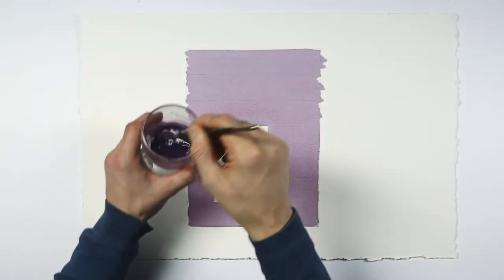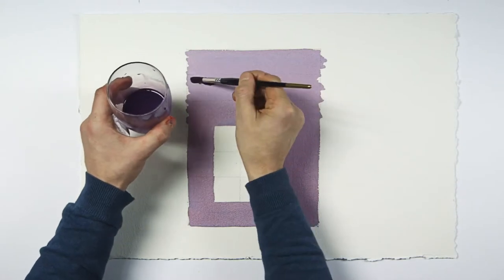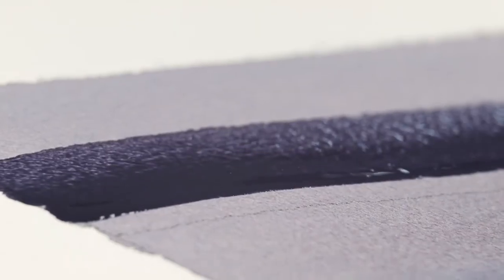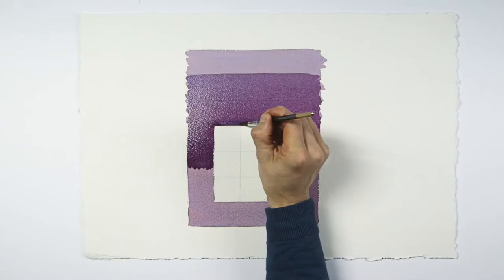Once dry, I'm laying down the second medium wash which is darker than the first. So now, including the white of the paper, we have three tonal values.